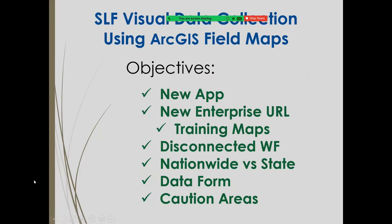So what are we going to talk about today? We're going to talk about the new Field Maps application, signing into that application — which requires you to know a URL, and there are two different URLs. This year, we create a training version of your map and host those training maps in a stage environment. We'll overview the disconnected workflow, talk about nationwide versus state maps, look at the data form, and hit on a few caution areas.